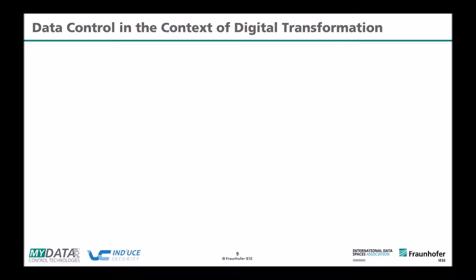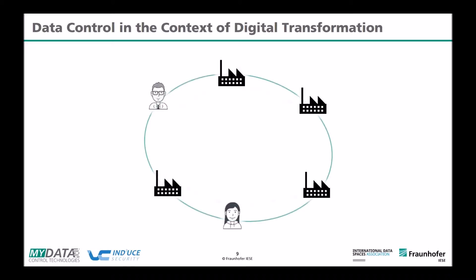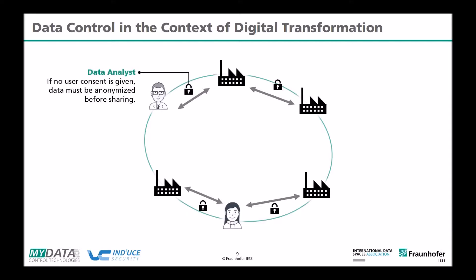Let's look at what data usage control is about. Nowadays many companies and clients exchange data together to do business. Each party has demands about how data is processed. For example, if you want to analyze customer data, users must give consent. If no consent is given, the data must be anonymized before sharing. This represents a usage restriction: if consent is given, data can be used; if not, only anonymized data may be used.